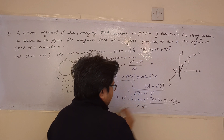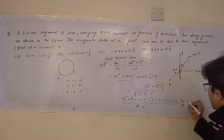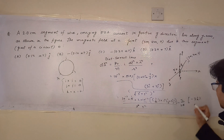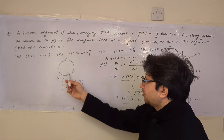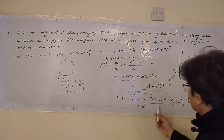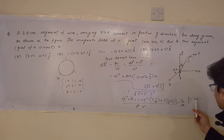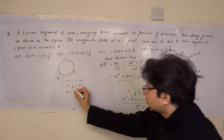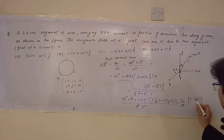We have 10⁻⁷ × 5 × 2×10⁻² ĵ × (3î + 4ĵ) divided by 5³. After cancellation, the denominator becomes 5². Then: ĵ × 3î = −3k̂, because ĵ × î = −k̂ (reverse cyclic direction). And ĵ × ĵ = 0. So the cross product gives −3k̂, and the 4ĵ term contributes 0.